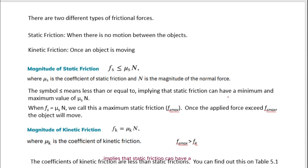This implies that static friction can have a minimum and maximum value of mu s times n. When static friction equals mu s times n, we call this a maximum static friction, F s max.